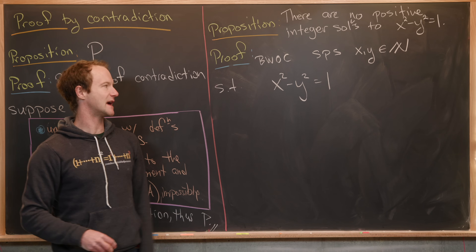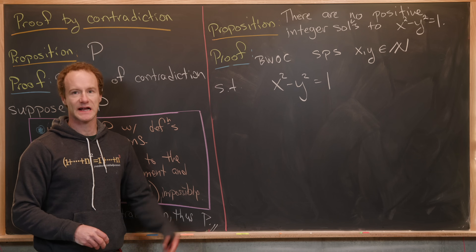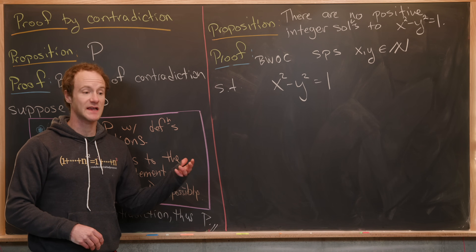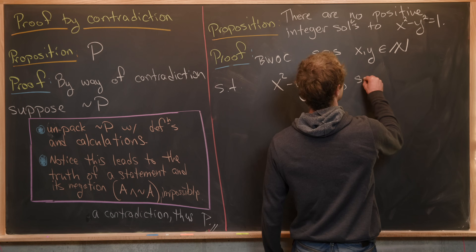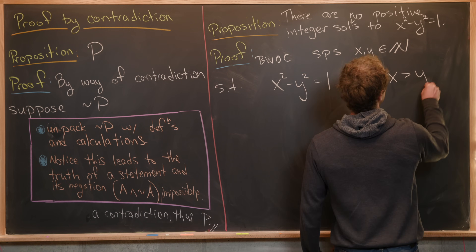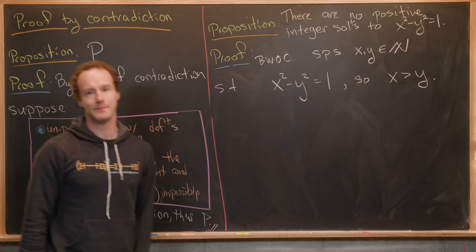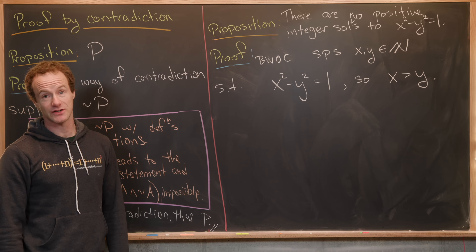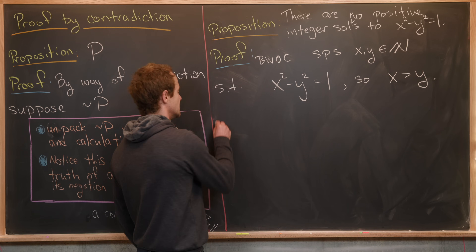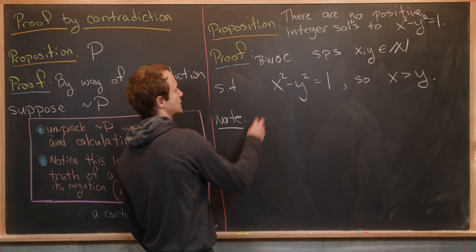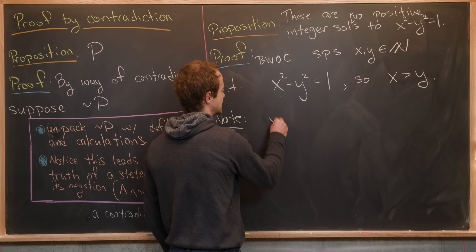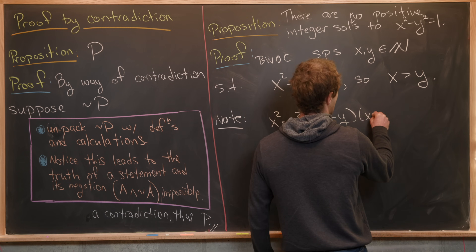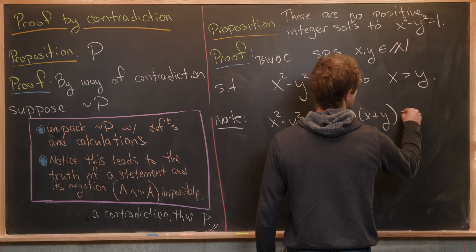Notice that x squared minus y squared equals one means it's bigger than zero, which means x is strictly bigger than y — we get that immediately. Next, we factor this as a difference of squares: x minus y times x plus y equals one.